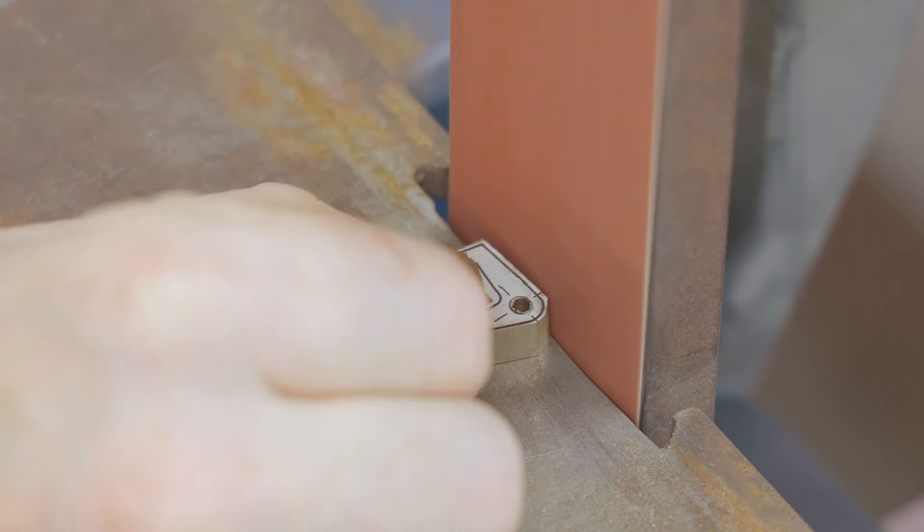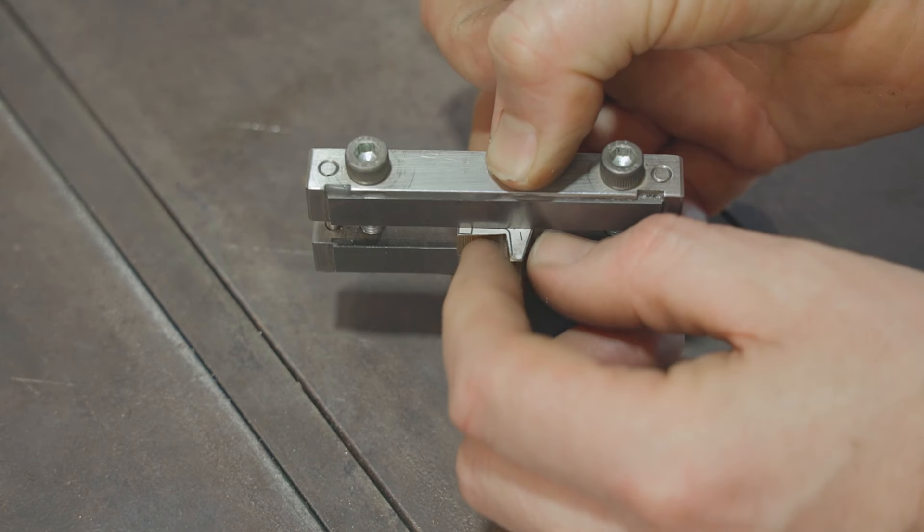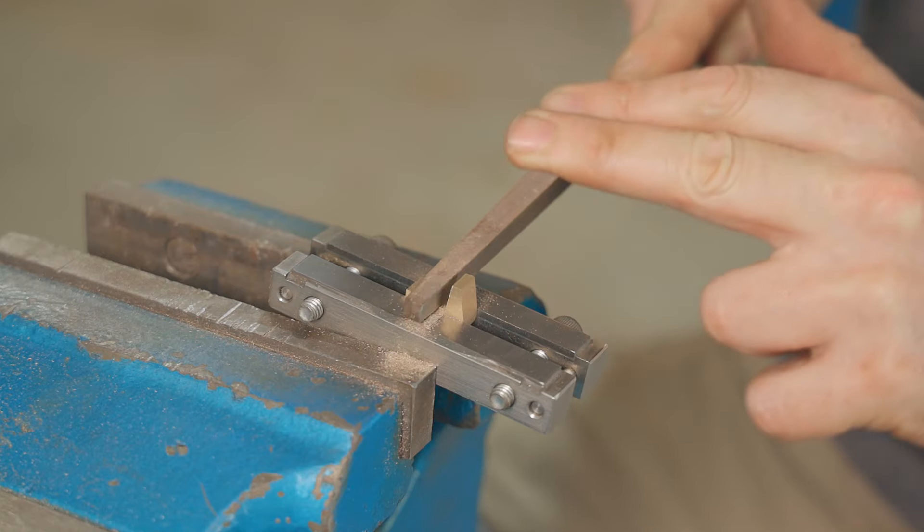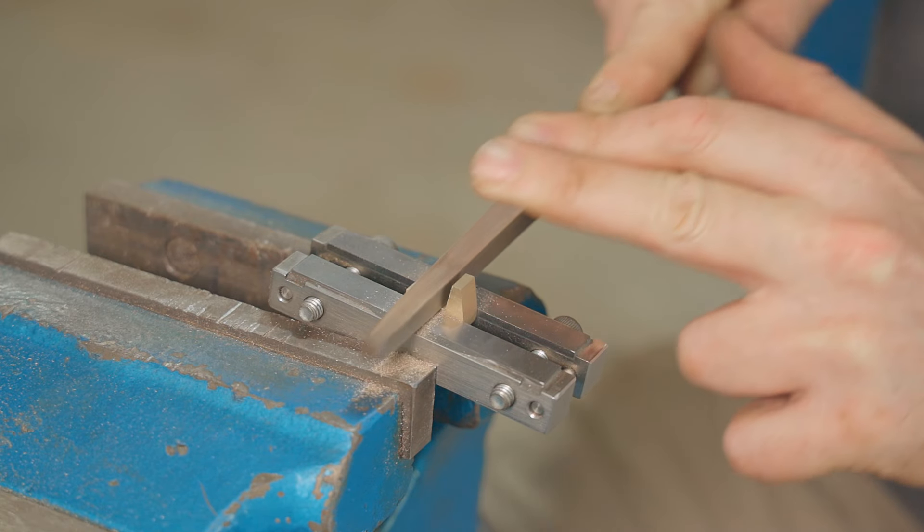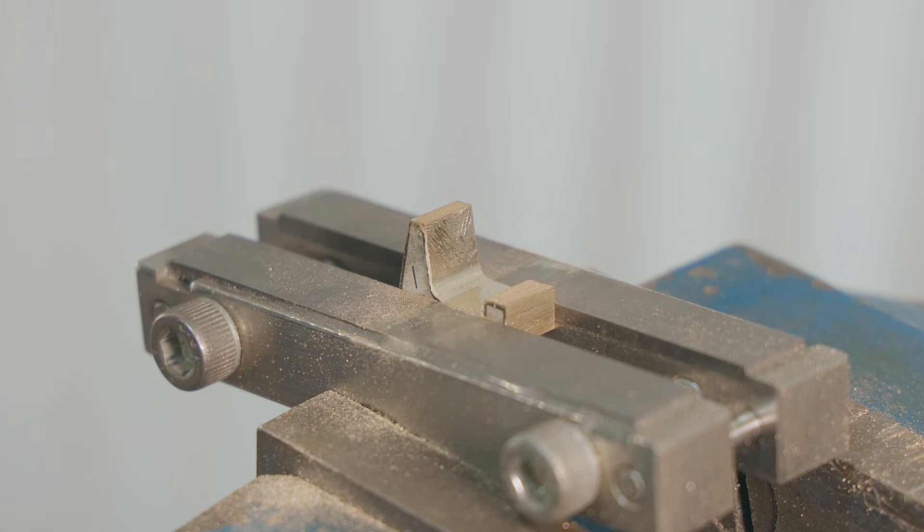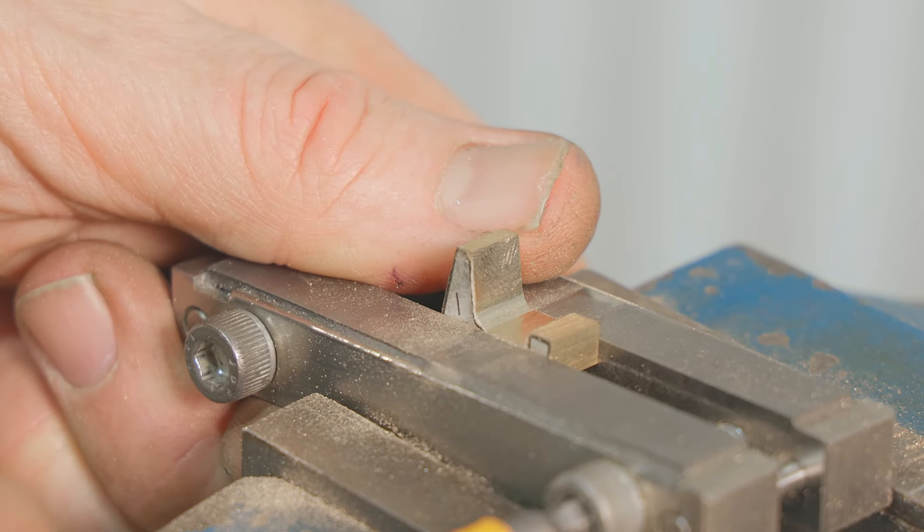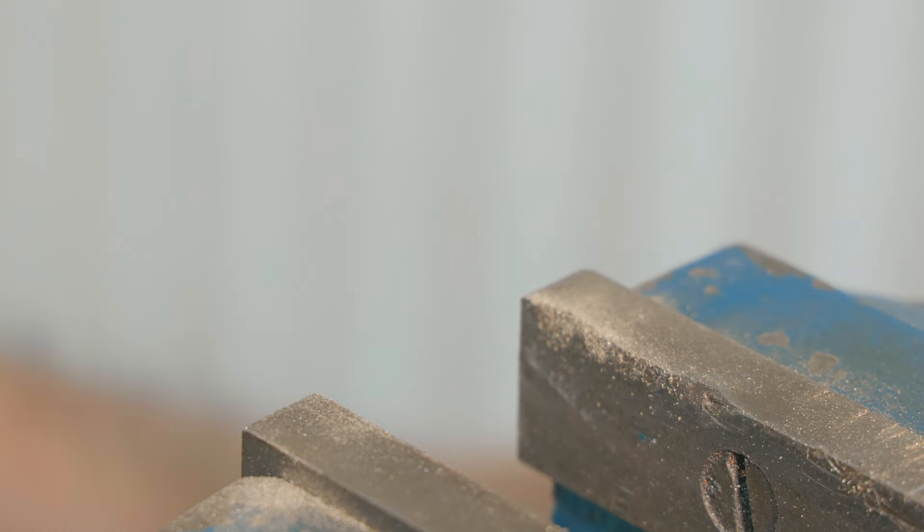This part needs to be pretty accurate so I'll make use of the file guide again. When using the file guide I don't use my best files as the carbide faces will destroy them, but the fact that the faces are extremely hard the file won't touch them, and that's how you can get accurate results. And also they're very well engineered and that helps too.